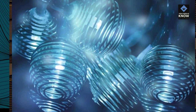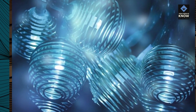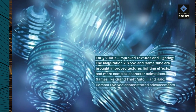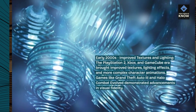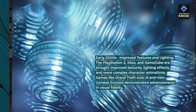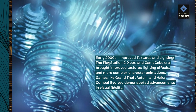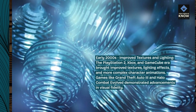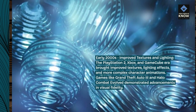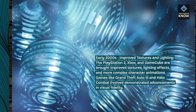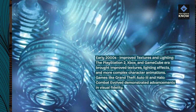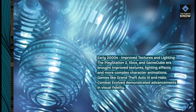Early 2000s — Improved textures and lighting. The PlayStation 2, Xbox, and GameCube era brought improved textures, lighting effects, and more complex character animations. Games like Grand Theft Auto 3 and Halo: Combat Evolved demonstrated advancements in visual fidelity.